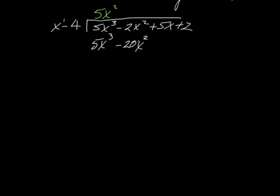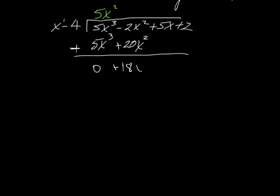We put a line and a subtraction sign — do not forget that subtraction sign. Now we subtract: 5x cubed minus 5x cubed gives zero. Then negative 2x squared minus negative 20x squared: two negatives make a positive, so negative 2x squared plus 20x squared gives us plus 18x squared.